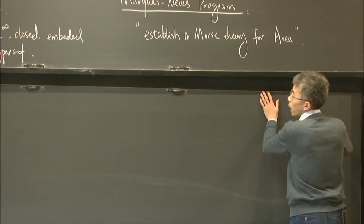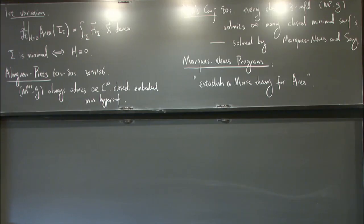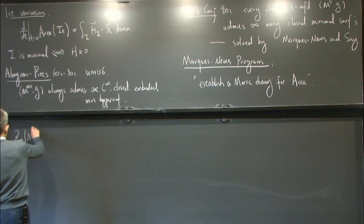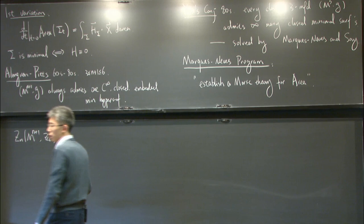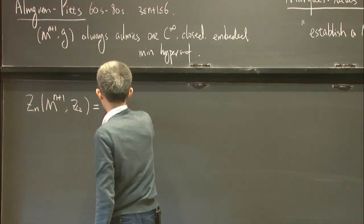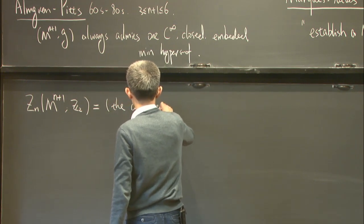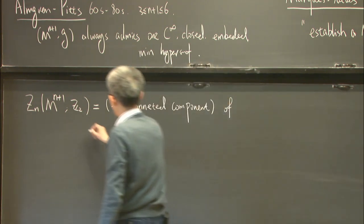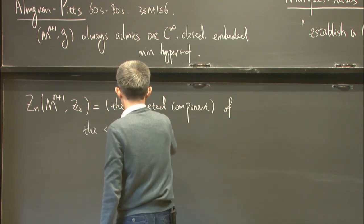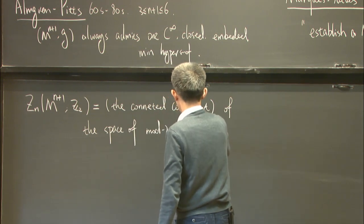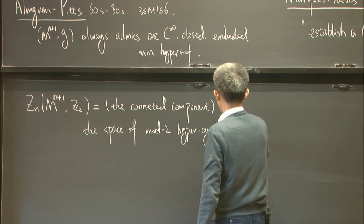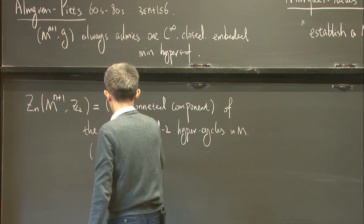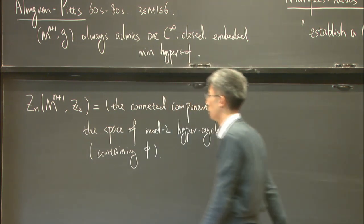The moral of this conjecture's theme is: we try to establish a Morse theory for the area functional in the space of hypersurfaces. The space they use is the space of mod-2 hypercycles — specifically the connected component of the space of mod-2 cycles in M containing zero, i.e., containing all empty sets.